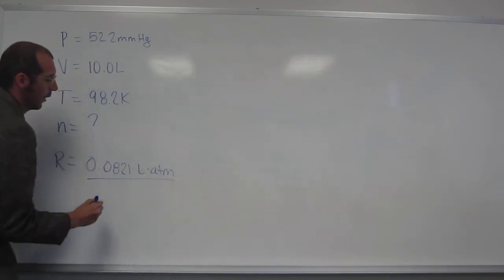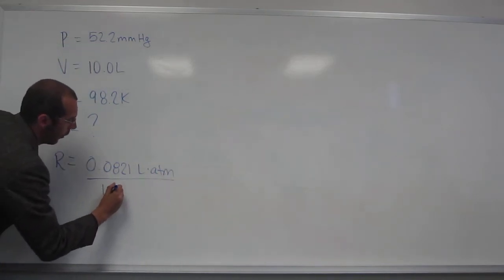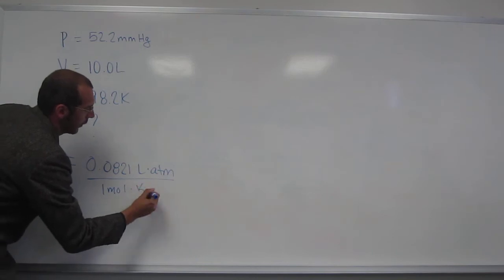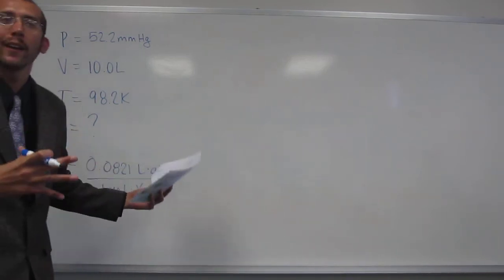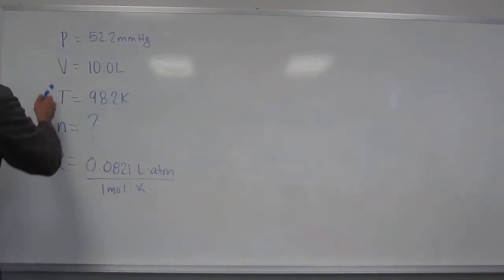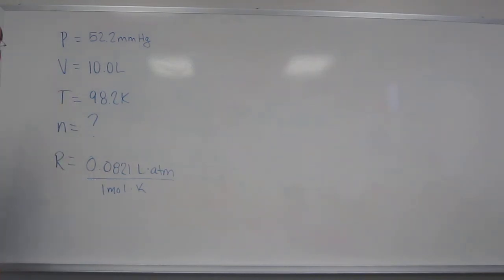0.0821 liter atm divided by 1 mole kelvin. That's the way I like to write it, because it's the expanded way, right? So, we've got V, V, T, and R, right? And nothing changed, right? So we're just going to use straight up PV equals NRT.